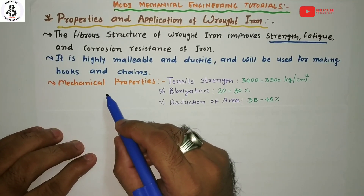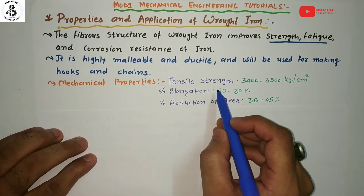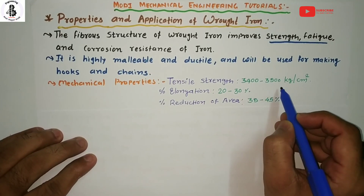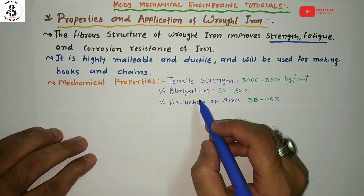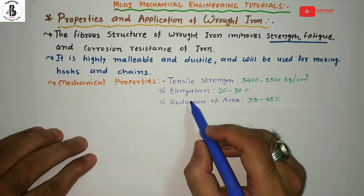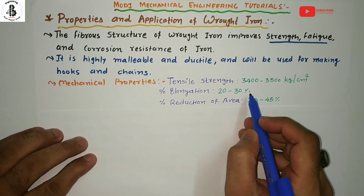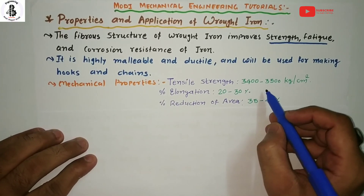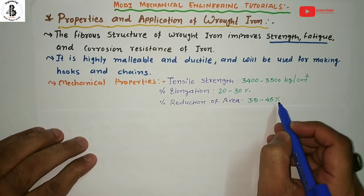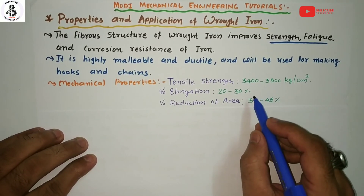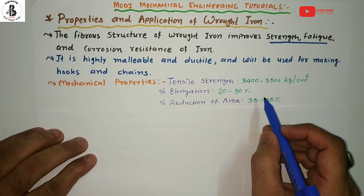Now discussing the mechanical properties present in wrought irons: the tensile strength is around 3400 to 3500 kg per centimeter square, making it useful as a workpiece material. Elongation is 20 to 30 percent, indicating good ductility. The percentage reduction of area is around 35 to 45 percent. According to these mechanical properties, wrought iron has good strength, corrosion resistance, and good ductility.